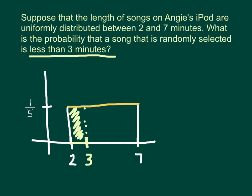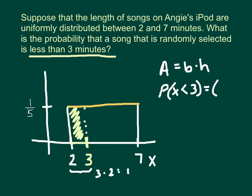And again, the area of a rectangle is just base times height. So the probability that x is less than three minutes is just going to be the base. And in this case the base is just one, three minus two. And my height is one-fifth that I found earlier. So the probability that your song length is less than three minutes is going to be one-fifth.